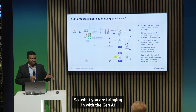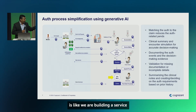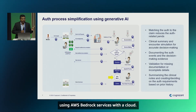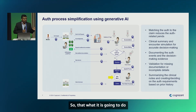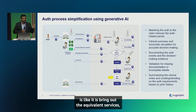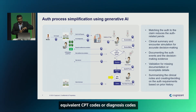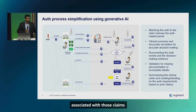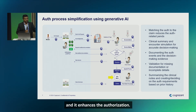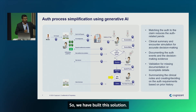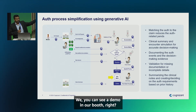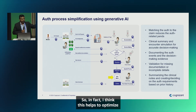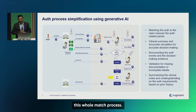What we are bringing in with Gen AI is a service built using AWS Bedrock. It brings out equivalent services — equivalent CPT codes or diagnosis codes associated with those claims — and enhances the authorization match. We have built this solution, and you can see a demo in our booth. This helps to optimize the whole match process.